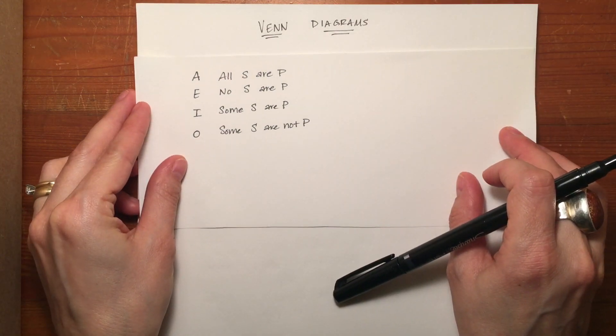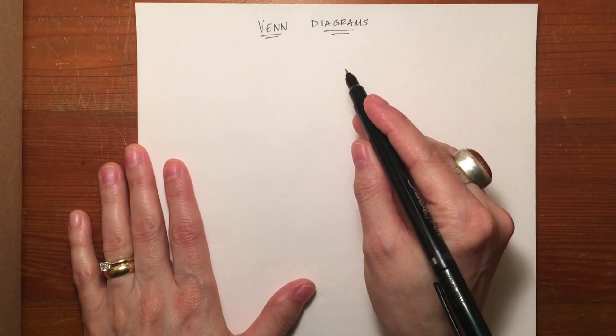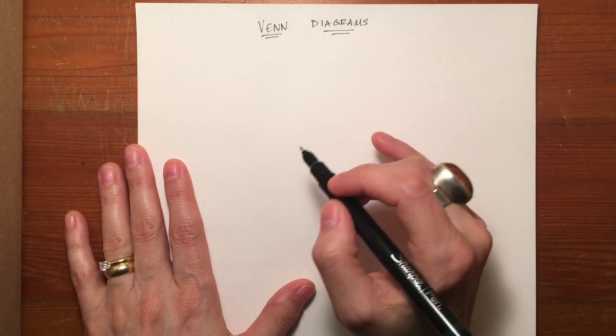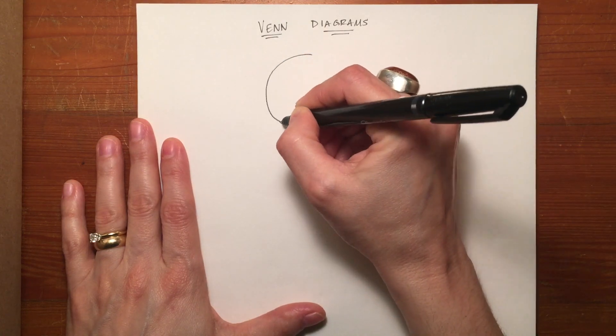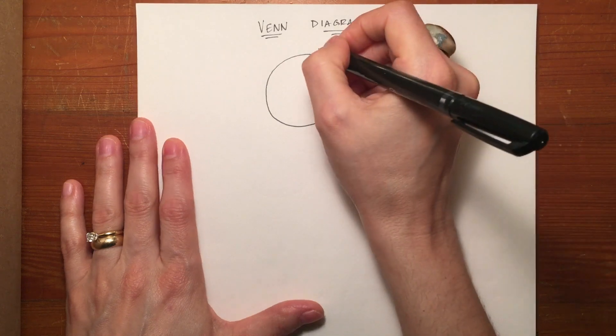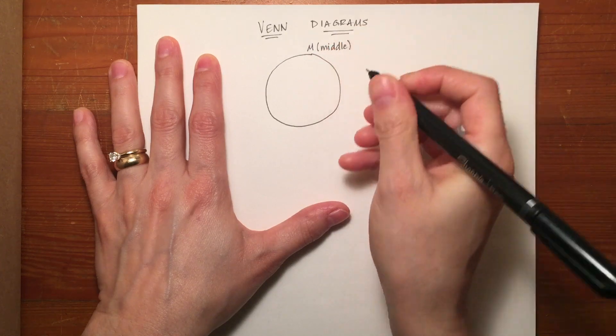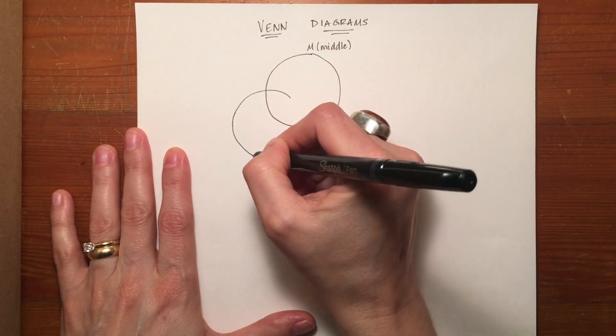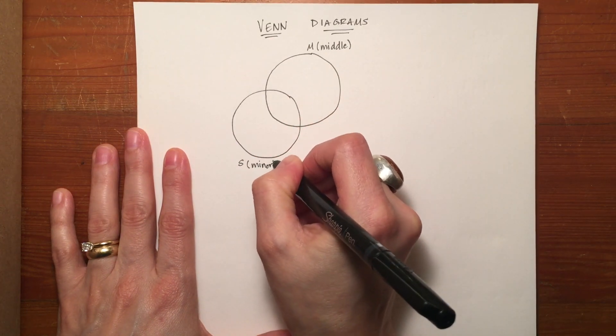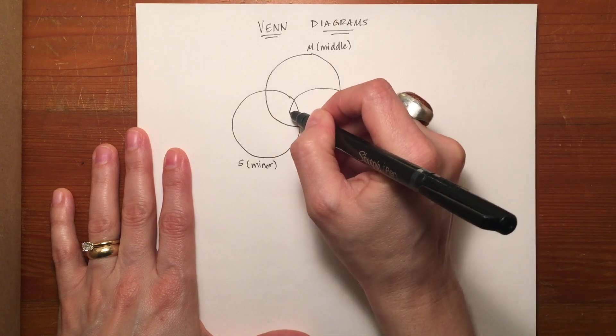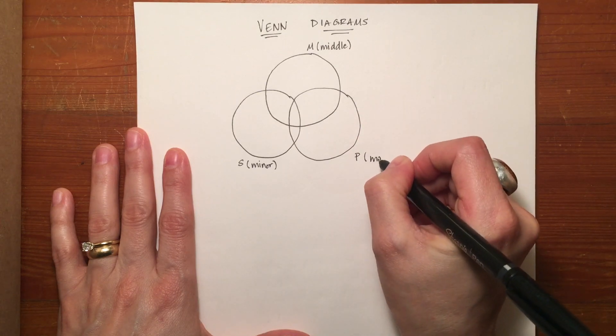Except now we're going to represent each one of the three terms that are repeated—the major, the minor, and the middle terms—with three circles that interlock. So you'll draw your first circle at the top here and that will stand for M or whatever the middle term is for that argument. There's a second circle here that stands for S or the minor term of your argument, and then a third circle for the major term of the argument, P.